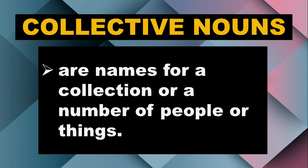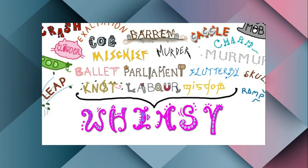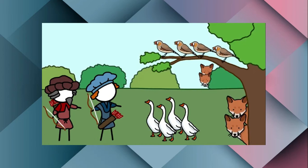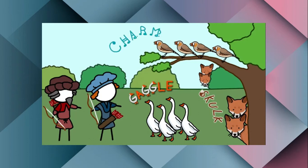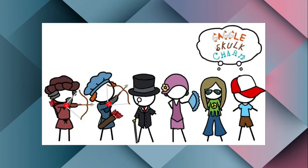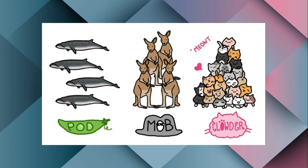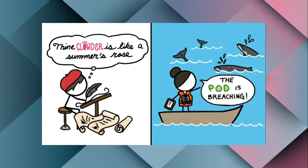Do you want to know a story about collective nouns? Here is the whimsical history of collective nouns. In the 15th century, the rich people or the aristocratic British hunters invented funny labels for a group of animals — like a gaggle of geese, a skulk of foxes, and a charm of finches.